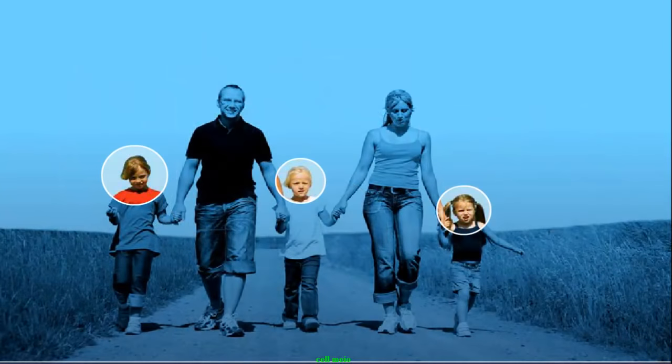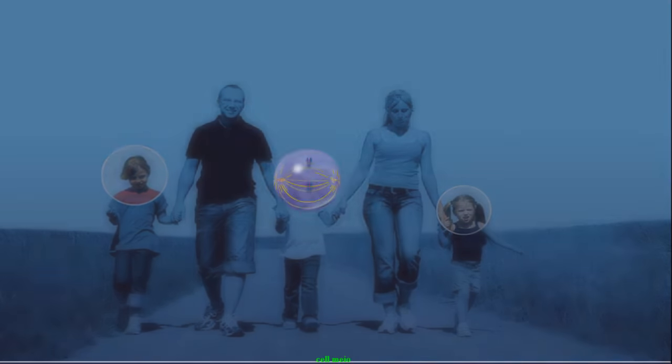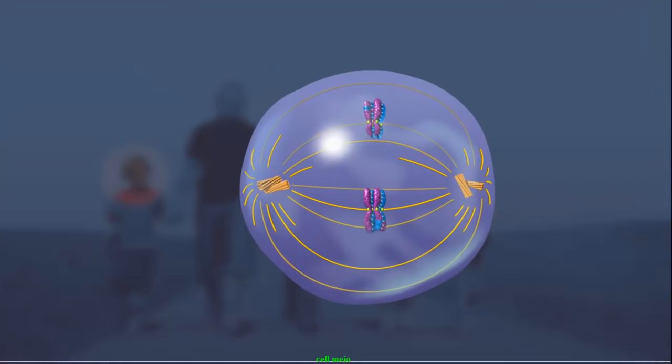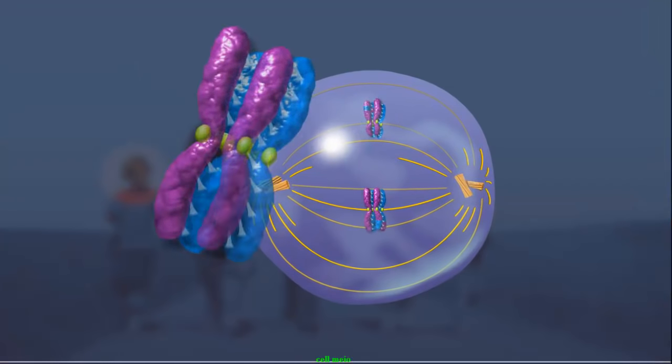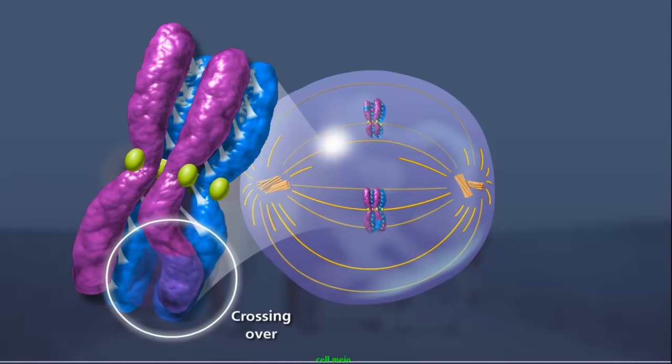But why aren't siblings identical? The diversity comes from several sources. In prophase I, non-sister chromatids can exchange DNA through crossing over, increasing the genetic diversity of individual chromatids.